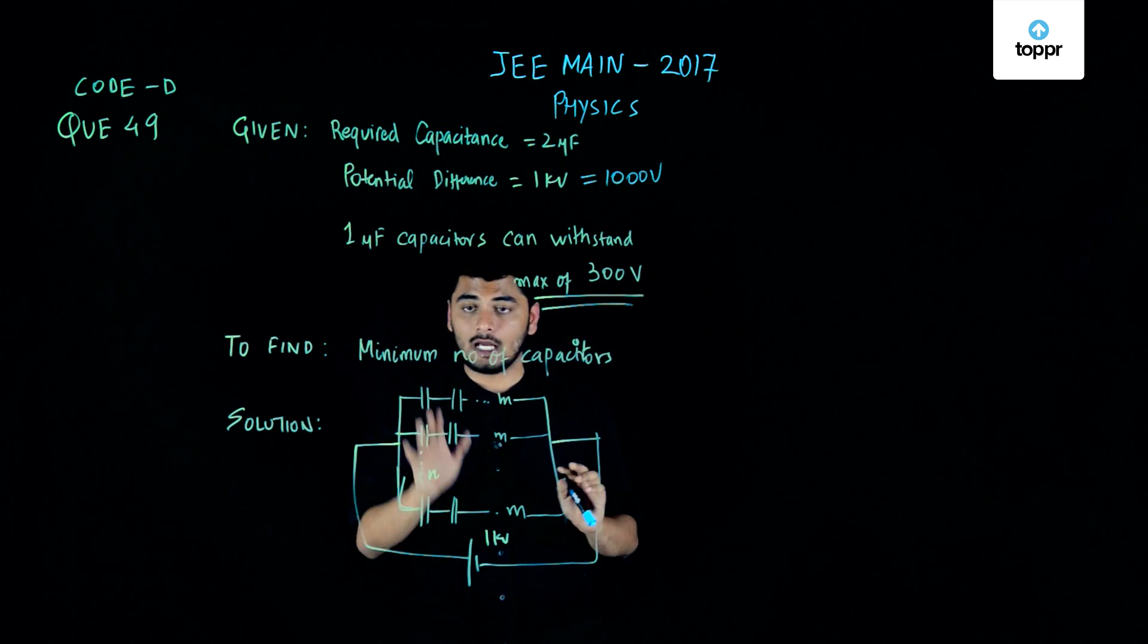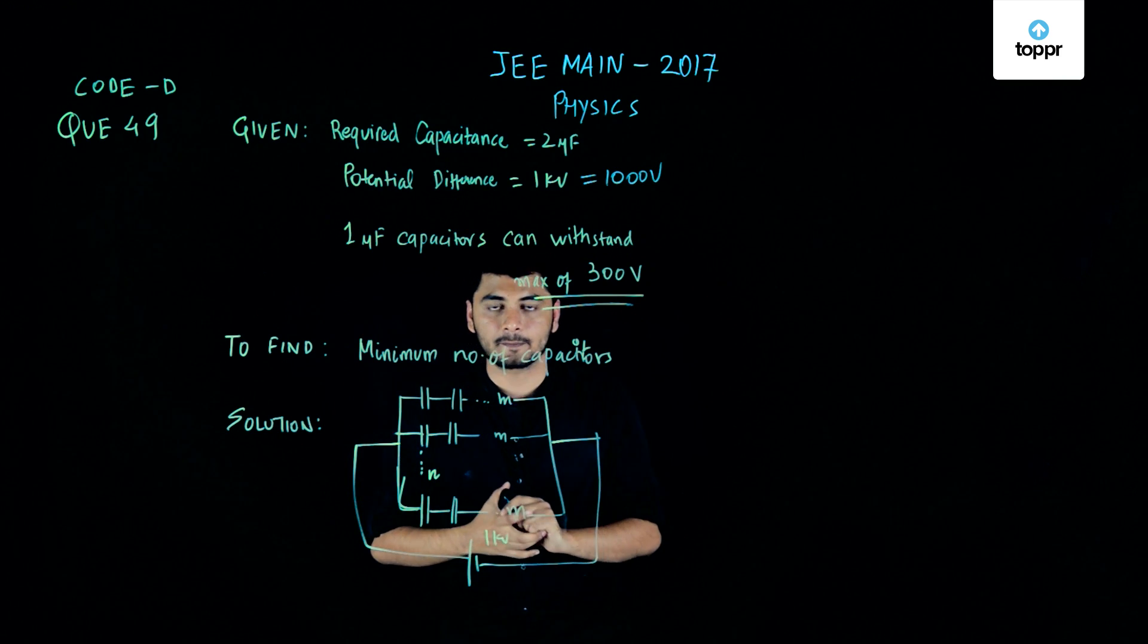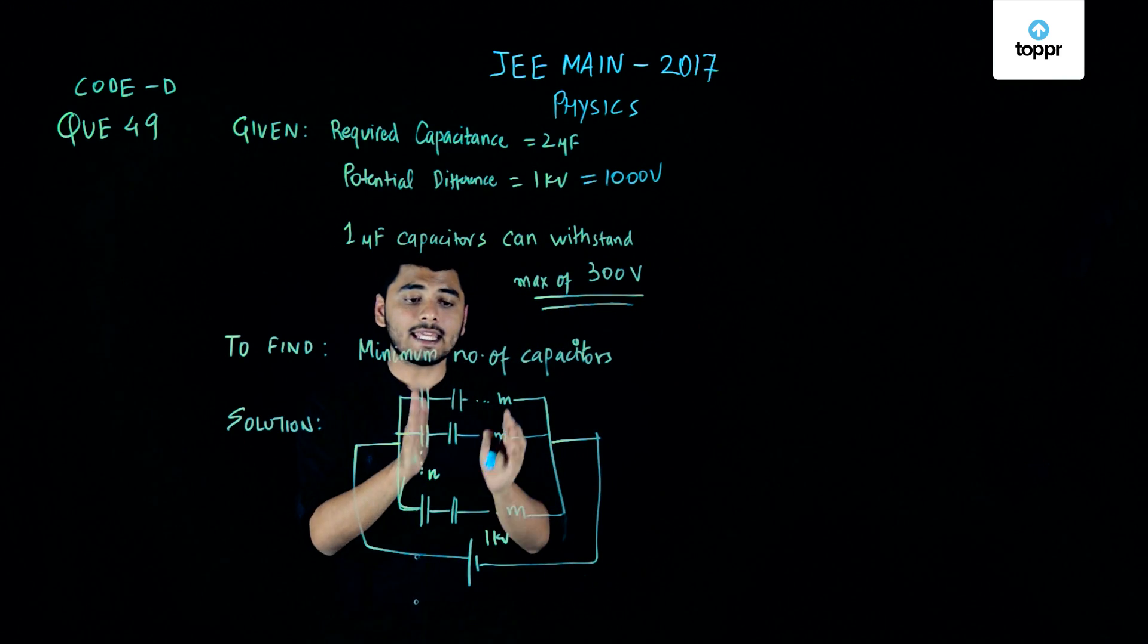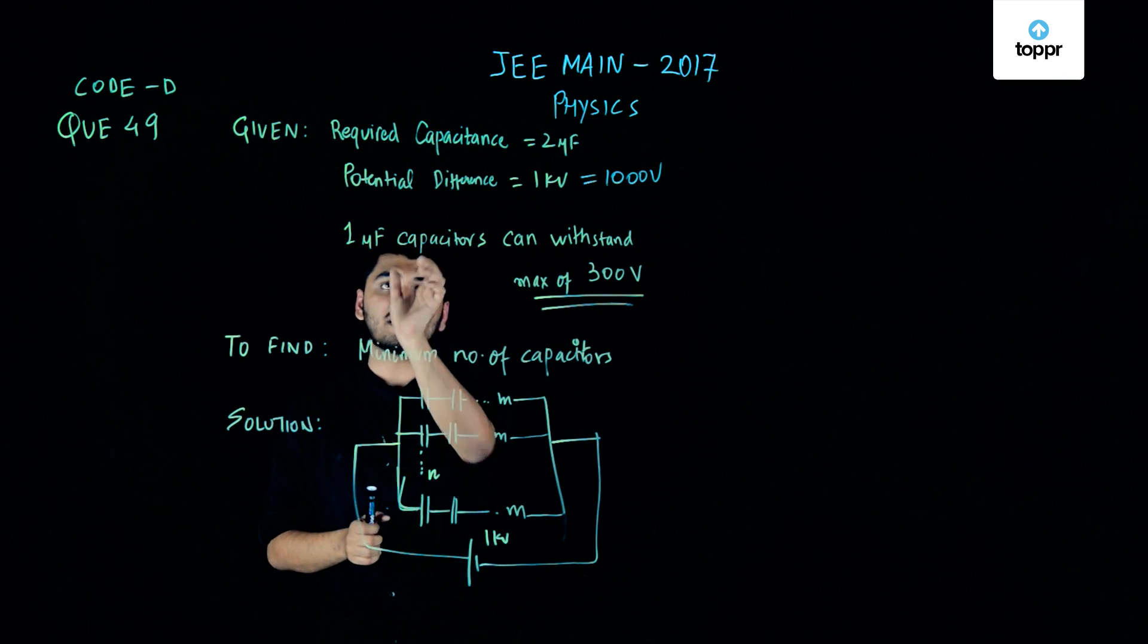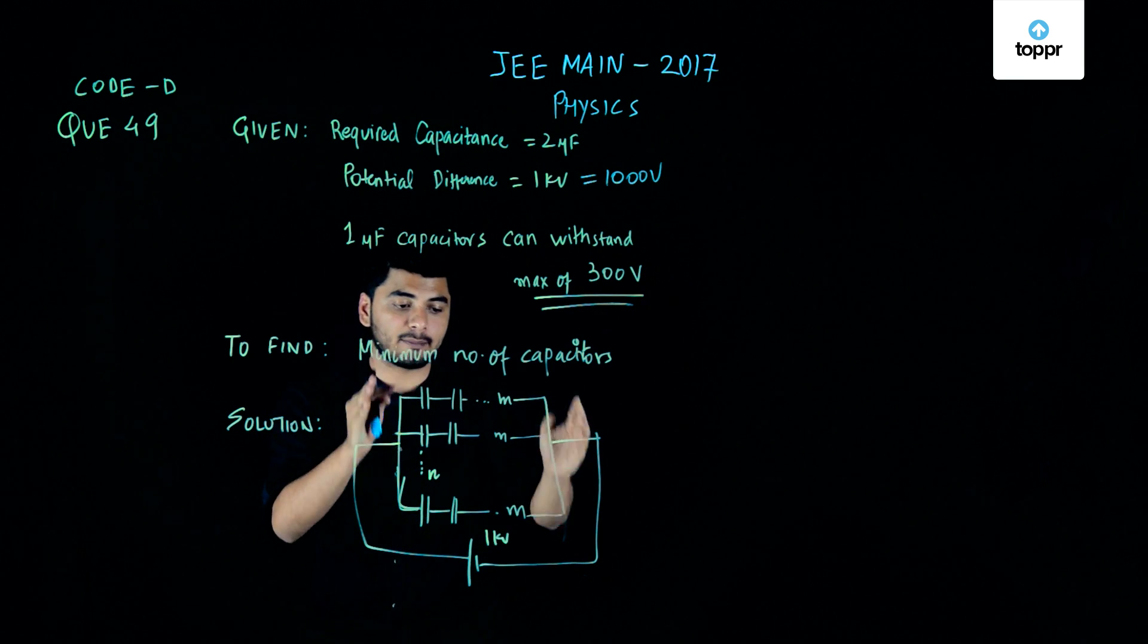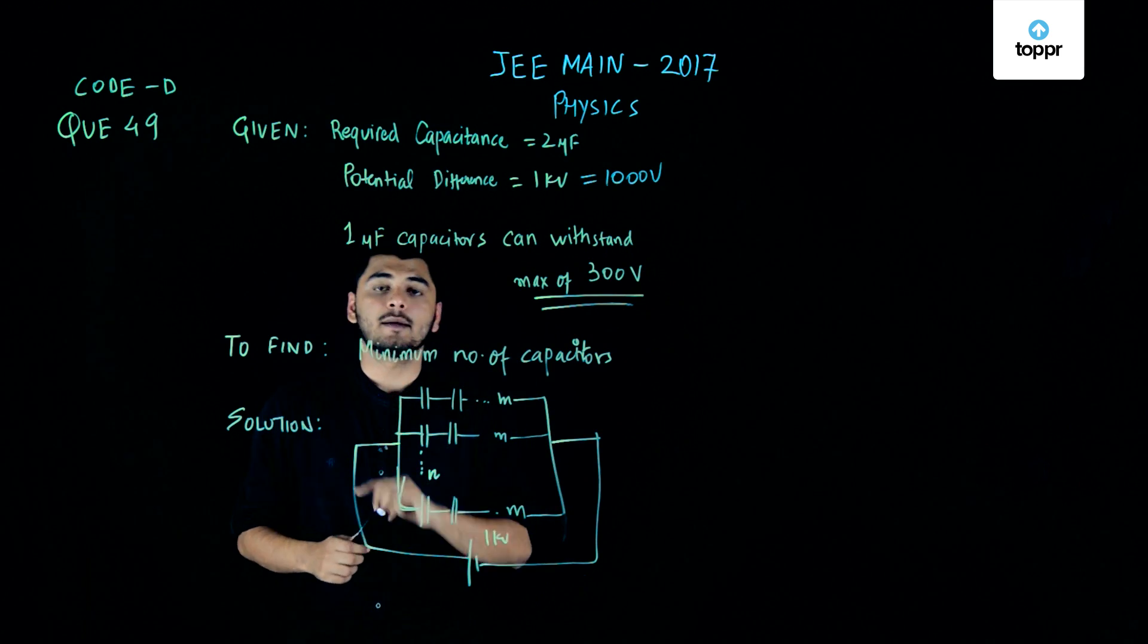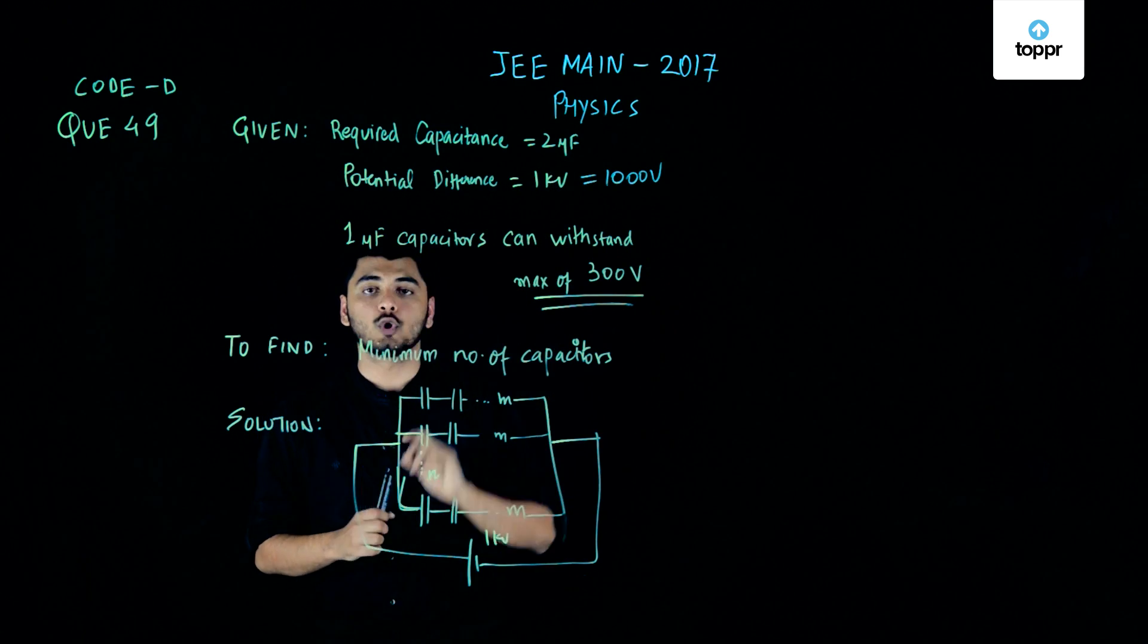So let us assume, and we have to use a minimum number of 1 microfarad capacitors. Let us assume I take m capacitors of 1 microfarad in each row and I use such n rows to complete my entire circuit. Now the entire capacitance of this must come out to be equals to 2 microfarads.